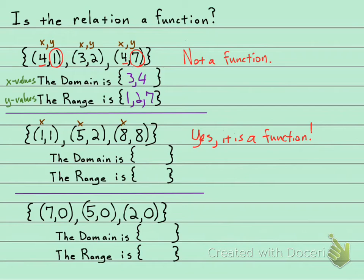The domain are all the x values, so that's going to be one, five, and eight. And the range is all the y values, so that's going to be one, two, and eight.